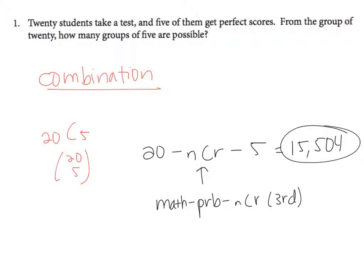So out of 20 students, there are 15,504 possible groups.